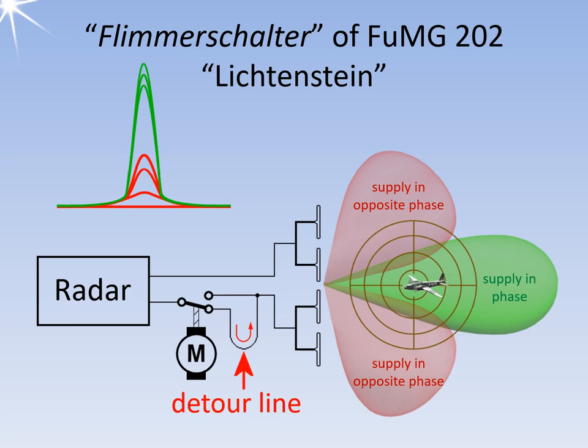The so-called flimmerschalter, in English flicker switch, allowed for the simultaneous display of the in-phase feed as a sum signal and the out-of-phase feed as a differential signal. However, the original oscilloscope did not allow for color differentiation, which is only shown in the diagram for explanatory purposes. The motor performed multiple switching operations per second, causing the image to flicker and giving the operating principle its name. The smaller amplitude was that of the differential signal, and the flicker switch was only activated when a sum signal was received.